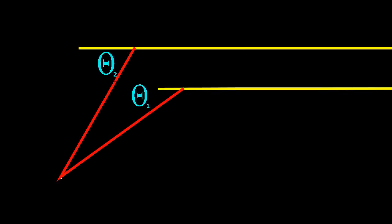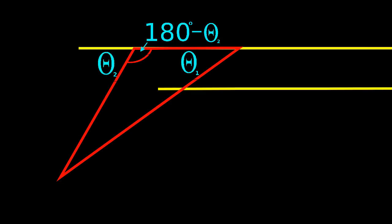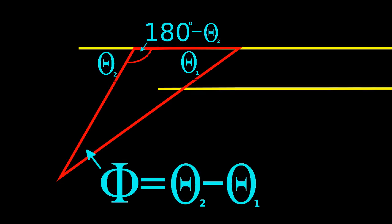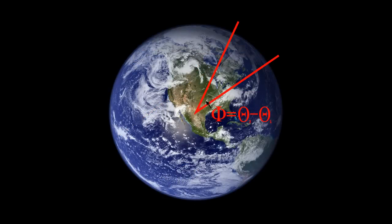Again, using trigonometry, we see that the angle separating the pairs of points on the Earth is related to the shadow angles by phi is equal to theta 2 minus theta 1.